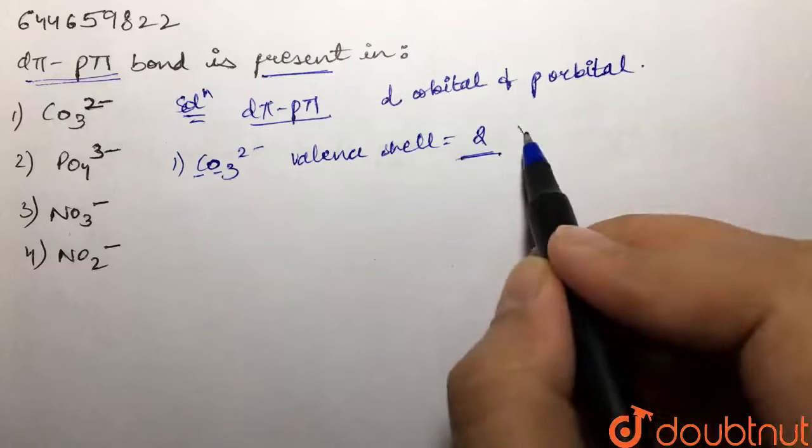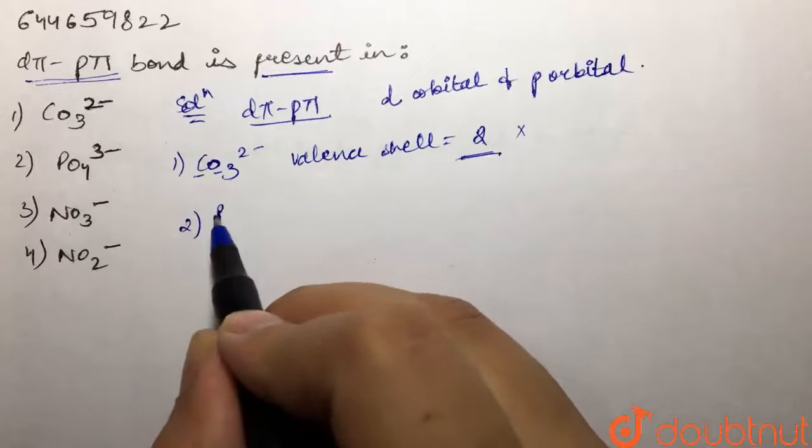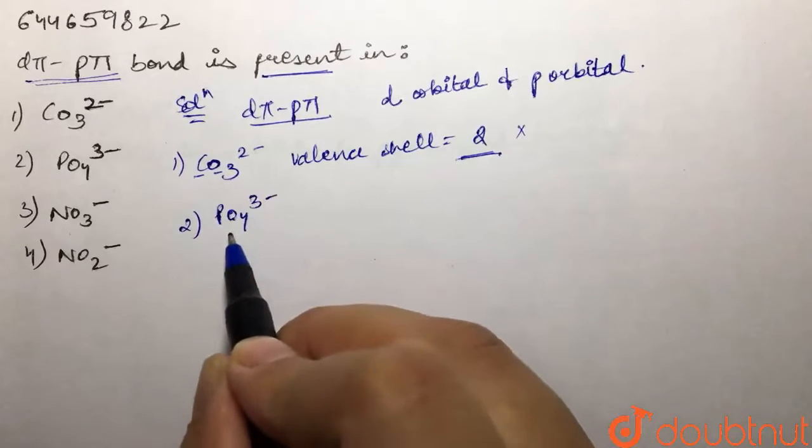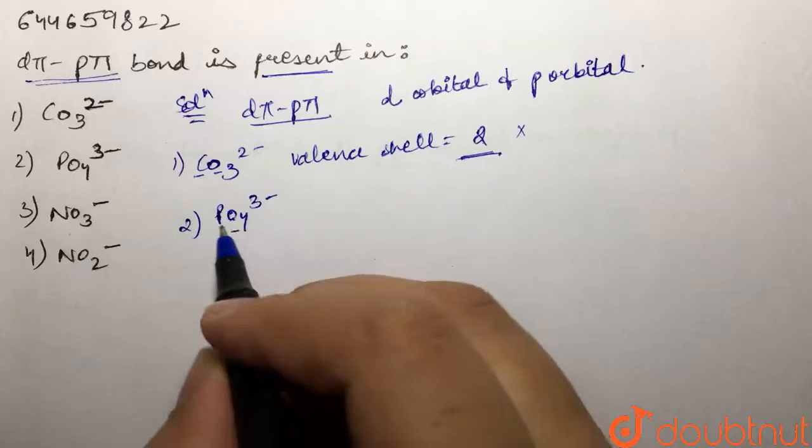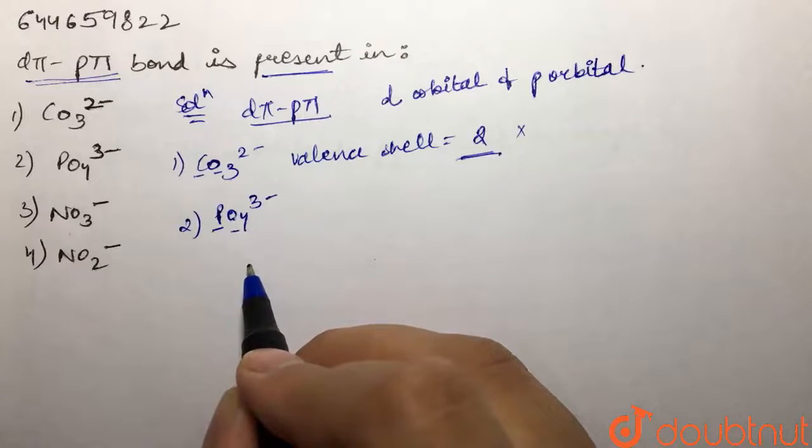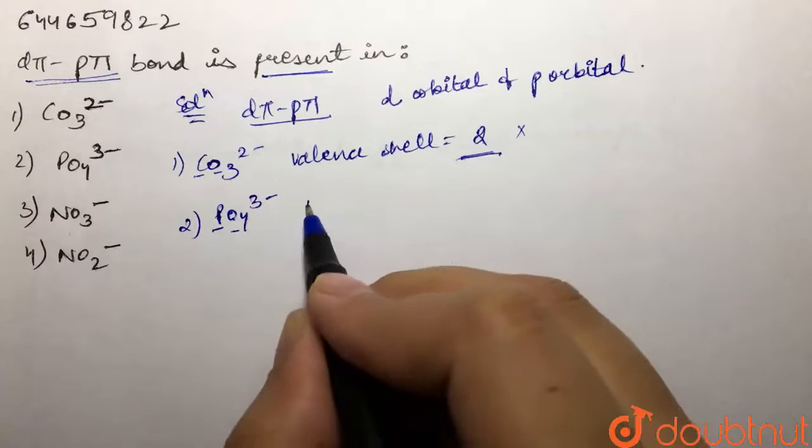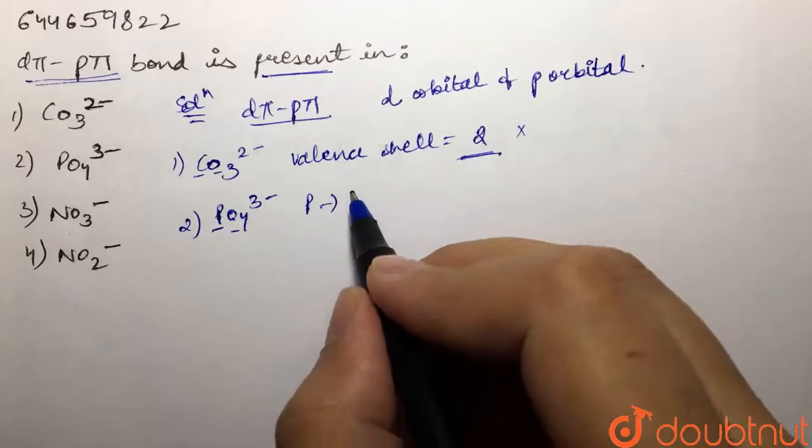Then we have PO₄³⁻. In this case, oxygen does not have any d orbital, but phosphorus sure does have. So if we write the electronic configuration for phosphorus, we have 1s² 2s² 2p⁶ 3s² and 3p³.